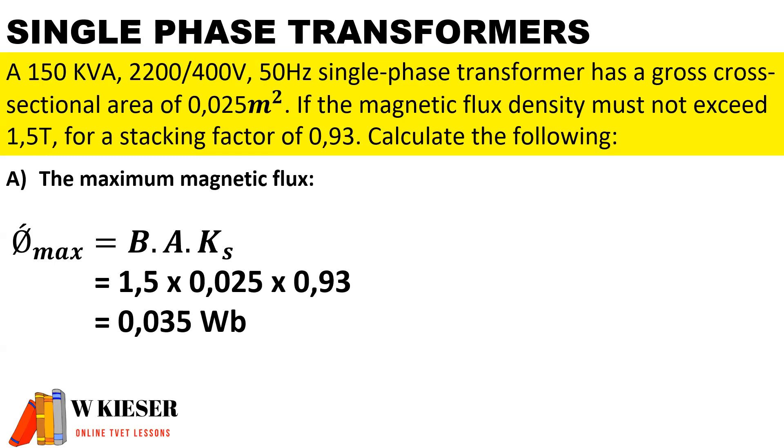In this calculation: a 150 kVA, 2200 on the primary and 400 volts on the secondary, 50 hertz single-phase transformer has a gross cross-sectional area of 0.025 meters squared. If the magnetic flux density must not exceed 1.5 Tesla for a stacking factor of 0.93, we need to determine the following.